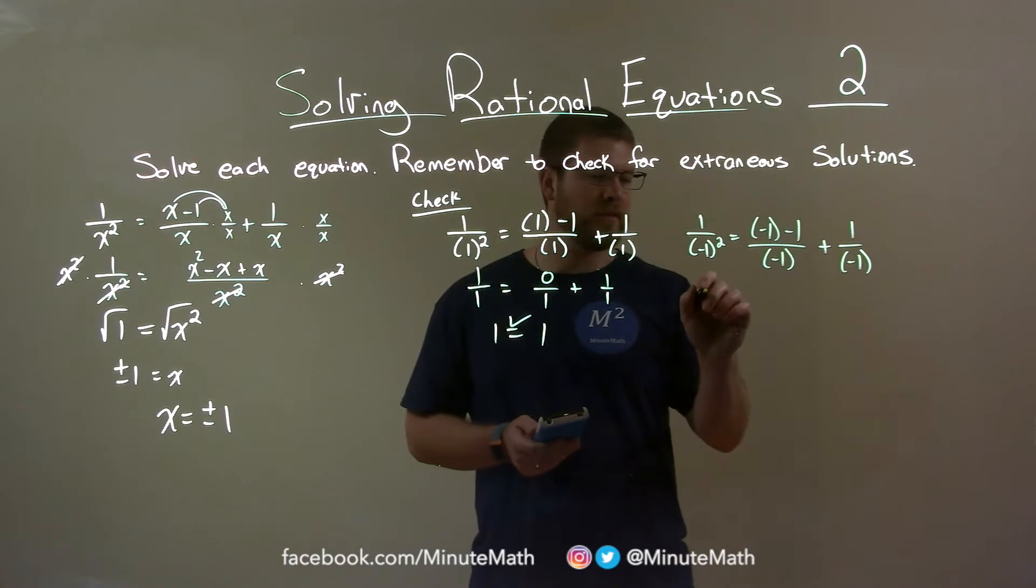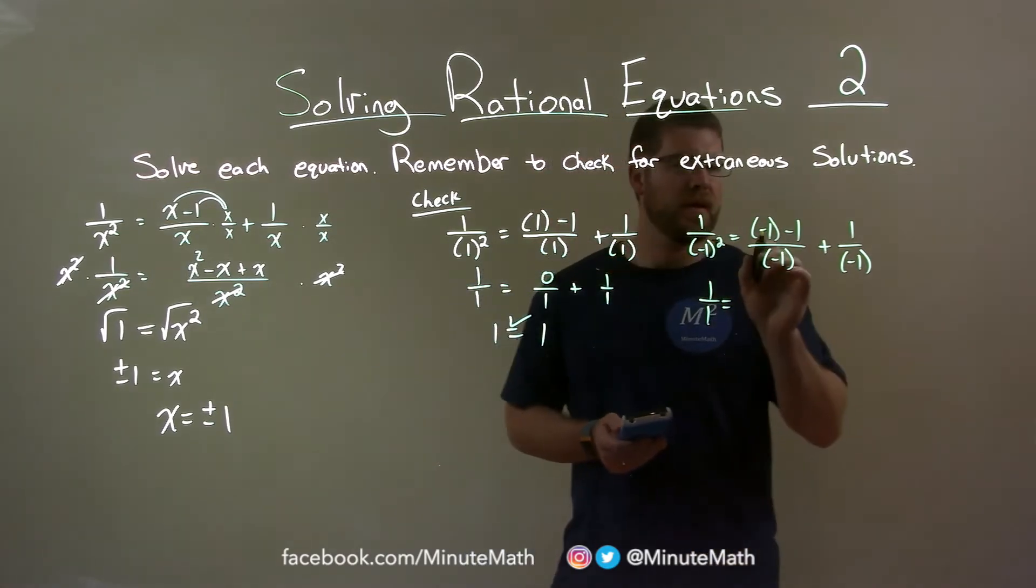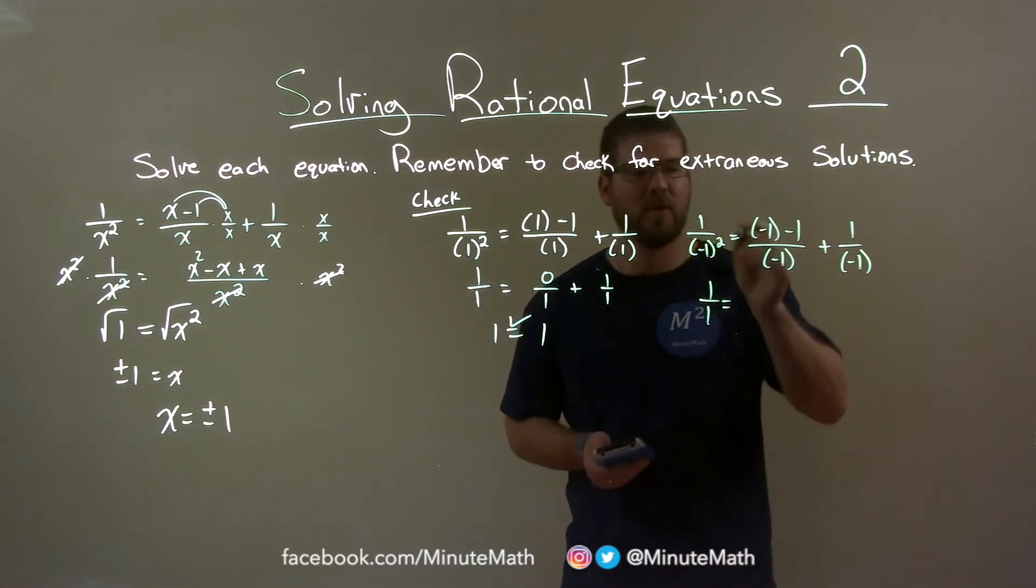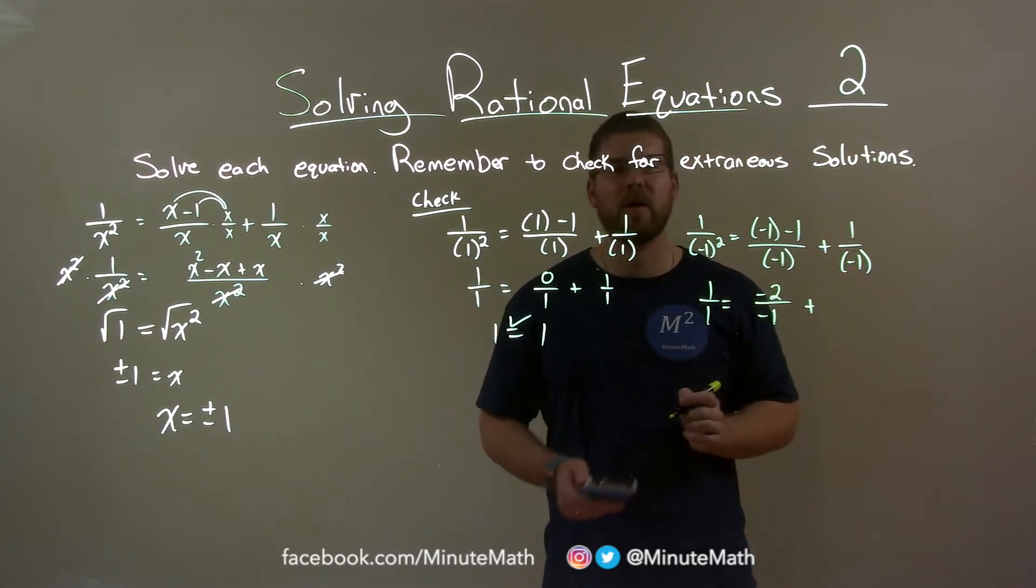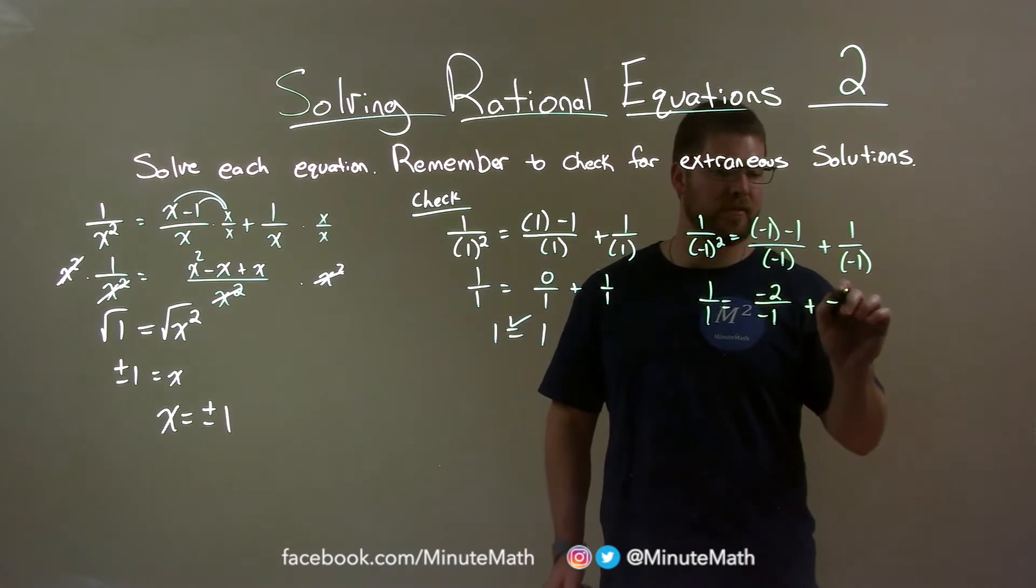Negative 1 squared is a positive 1, so we have 1 over 1 here. Negative 1 minus 1 is negative 2 over negative 1, plus 1 divided by negative 1 is negative 1.